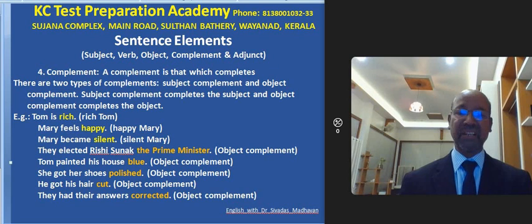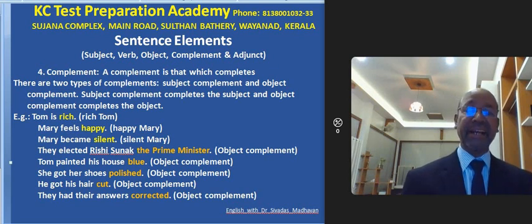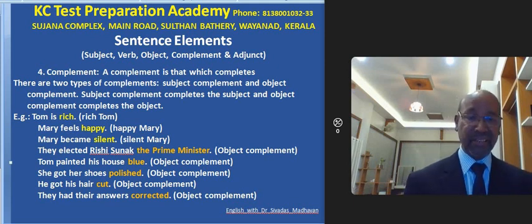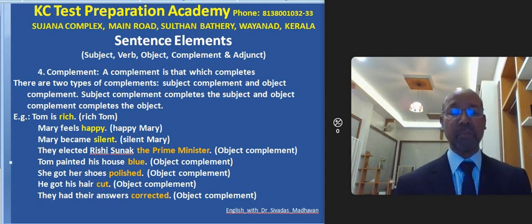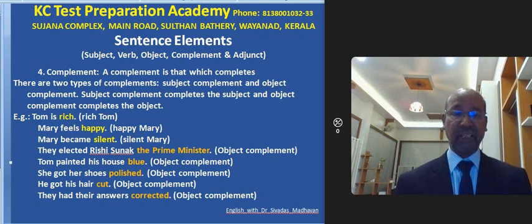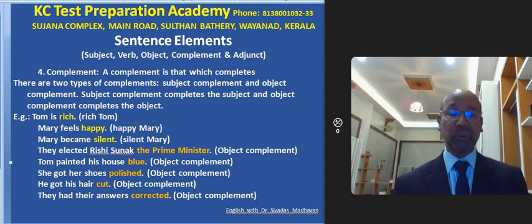There are some more examples. He got his hair cut. He is the subject, got is the verb, his hair is the object, and cut is the past participle form used as an adjective — so cut is the object complement. She got her shoes polished. Polished shoes — her shoes is the object, polished is the object complement.